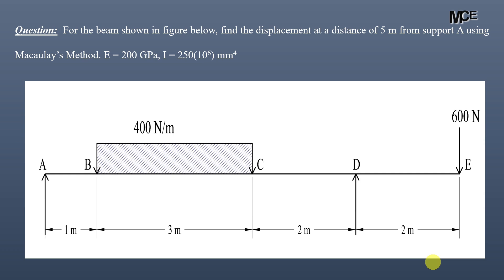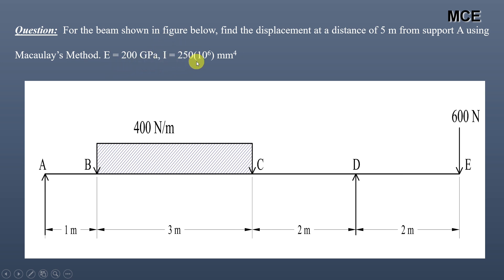Hello and welcome back to Master Civil Engineering. In the previous video we learned how to find the deflection of a beam using the double integration method. In this video you will learn how to find the displacement of a beam at any point using a much more convenient method known as Macaulay's method. The given problem states: find the displacement at a distance of 5 meters from support A. The modulus of elasticity E is 200 GPa and moment of inertia is 250 × 10⁶ mm⁴.